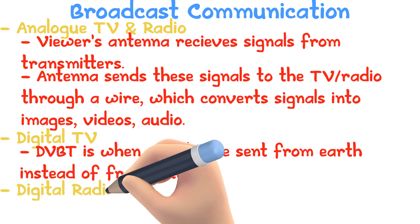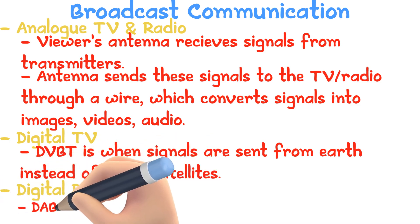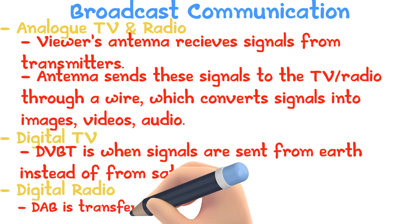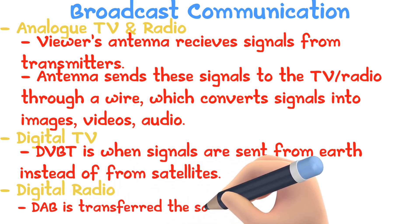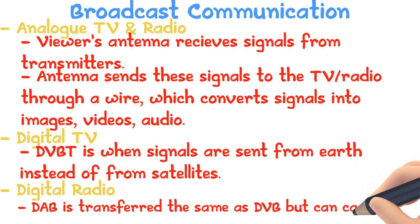Digital Radio: Digital Audio Broadcasting is broadcasted the same way as a digital video broadcast, but it can also carry text that DAB receivers display, like the time, music details, and the name of the station.